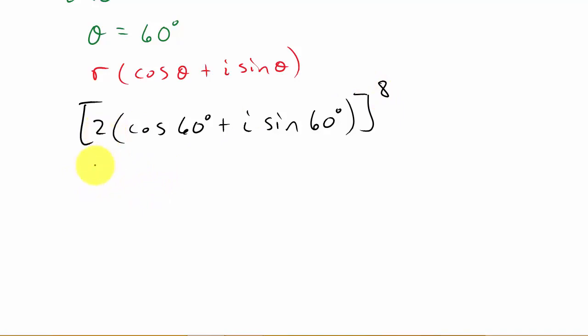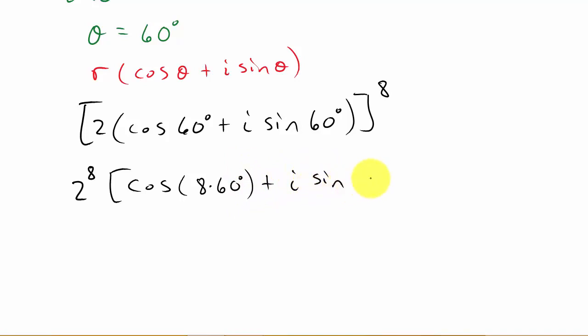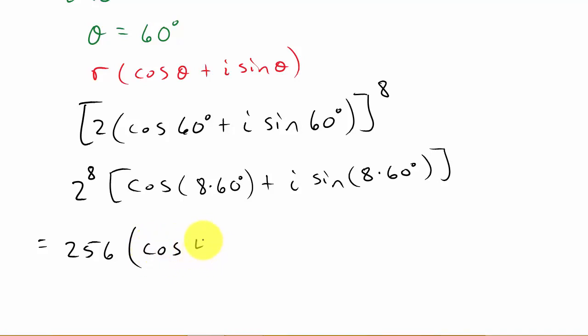We wanted to raise this to the 8th power, so that's what we'll do. We converted to trigonometric form because it makes it easier. Applying De Moivre's Theorem, this is going to be r to the nth — so 2 to the 8th — times cosine of n times theta, which is 8 times 60, plus i times sine of 8 times 60 degrees. So that gives us 256 times cosine of 480 plus i times sine of 480.